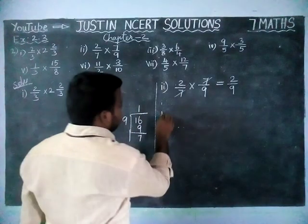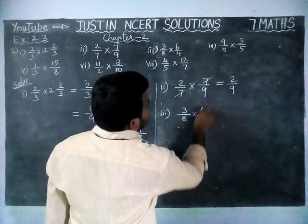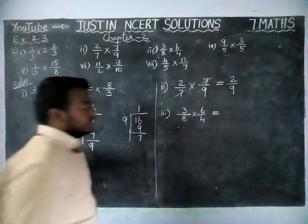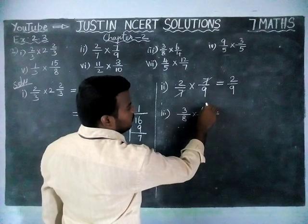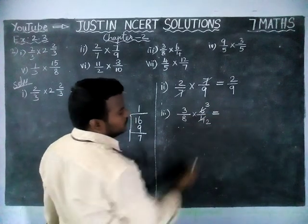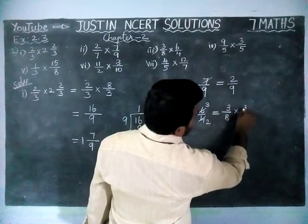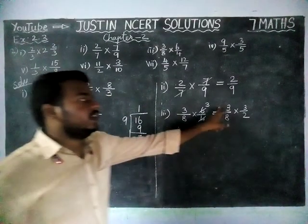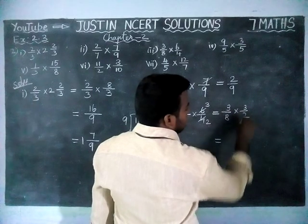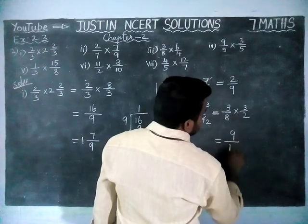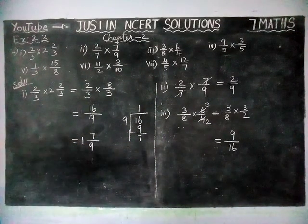Next, third question: 3/8 × 6/4 is equal to. Here if it is possible to simplify, we can simplify here itself. 3 × 2 = 6, and 2 × 2 = 4, so after simplifying we get 3/8 × 3/2. Now we multiply numerator into numerator and denominator into denominator: 3 × 3 = 9, and 8 × 2 = 16. Now this is a proper fraction, so we cannot simplify further. So 9/16 is the answer.